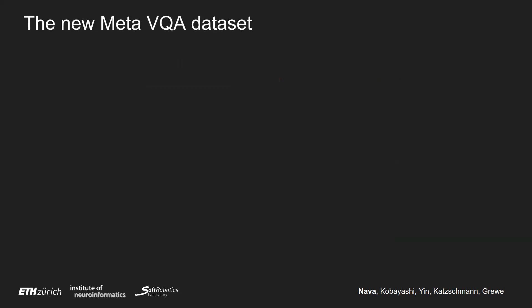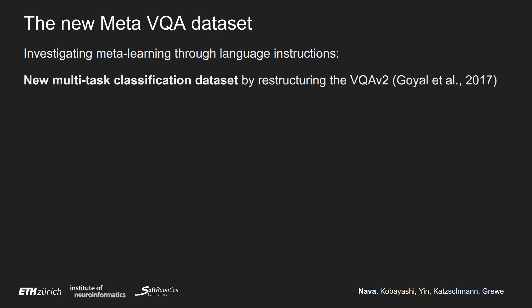In order to test our techniques, we introduce a new kind of dataset: the MetaVQA dataset, in which we are investigating meta-learning through language descriptions, with a new multitask classification dataset obtained by reconstructing the VQA V2 dataset from Goyal et al.